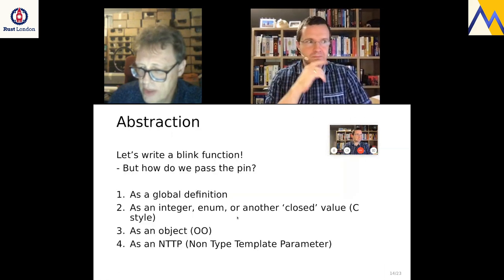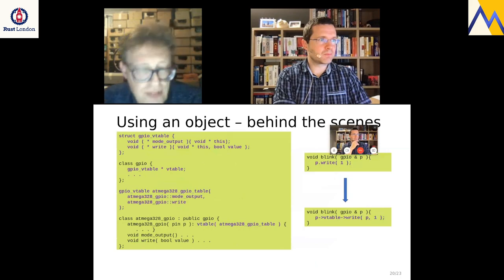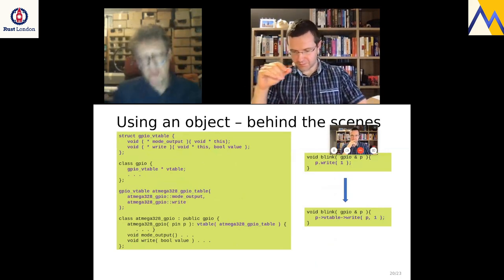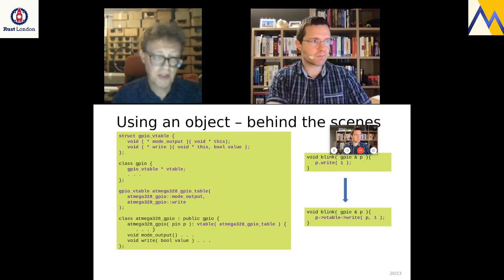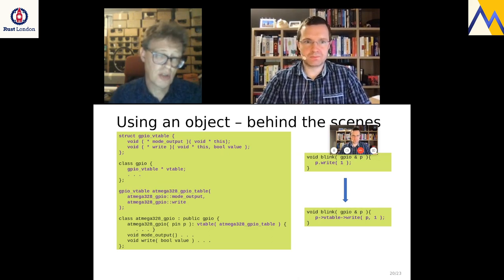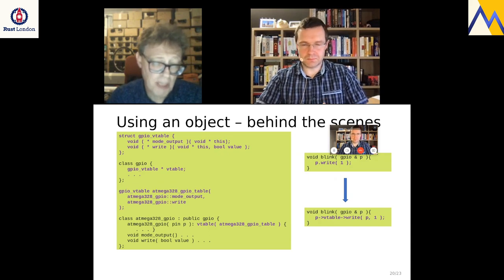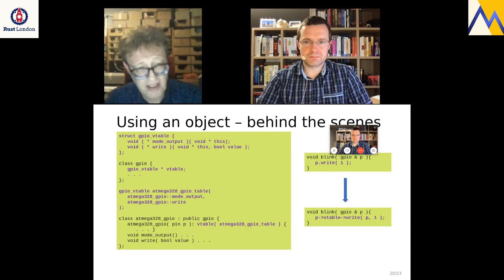A question about virtual function calls on slide 20: can the compiler make a concrete call and skip the vtable if everything is known at compile time? Yes, it can, and it will generally do that when you only blink one pin. But when you have two different pins and different parts of your program call the blink function with different pins, it can no longer optimize the function because it must work with different pins. So when you want the flexibility of the object-oriented approach, the compiler will no longer be able to optimize it. Where you don't need that flexibility, one of the other approaches might be better.